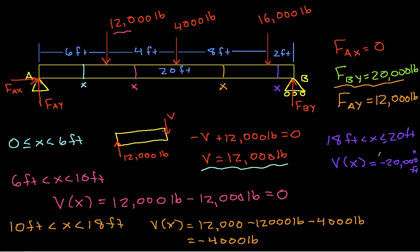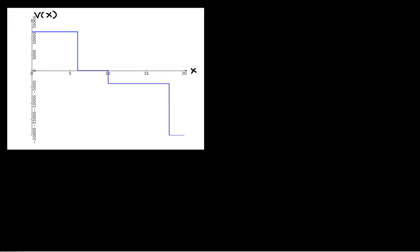I can plot this V(X) as a function of X, and I get a graph that looks like this. Between 0 and 6 feet, it's 12,000. Then between 6 feet and 10 feet, it's 0. Between 10 feet and 18 feet, it's minus 4,000. And between 18 and 20, it is minus 20,000. So we have our graph for V(X).